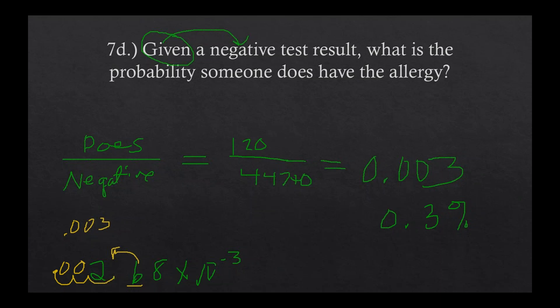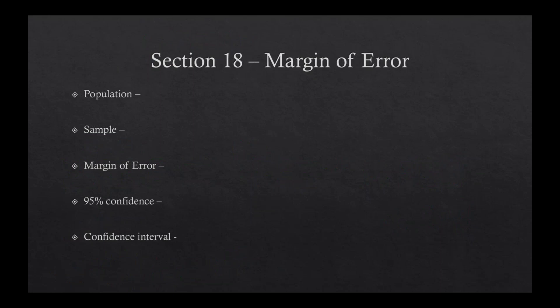That is Section 17. The only real new part is creating the tables, which can be a little tricky. There are practice problems in your packet and videos to go with them. Section 18 is the least mathematical of the three — it's more terminology and words. We're going to talk about five pieces: population, sample, margin of error, confidence interval, and writing a statement.